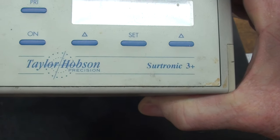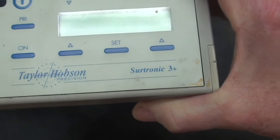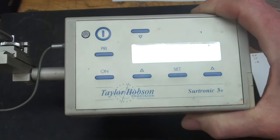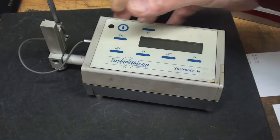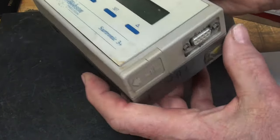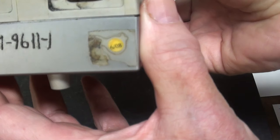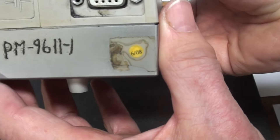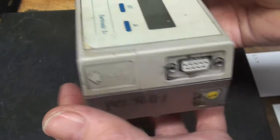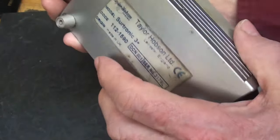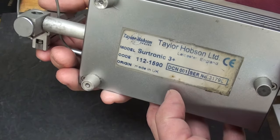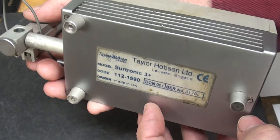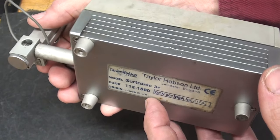This is a Taylor Hobson made in the UK called a Sertronic 3 Plus. This probably is an older model because I noticed on here that the last time that it has been calibrated is 08 June of 08. This is where the battery goes, there's the trade name and serial number and all of that. It's got three legs, you know it's like a milking stool, doesn't matter what you set it on, it's not going to wobble.